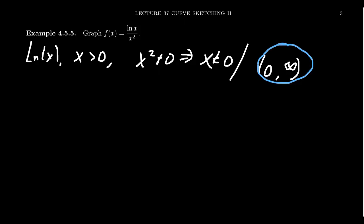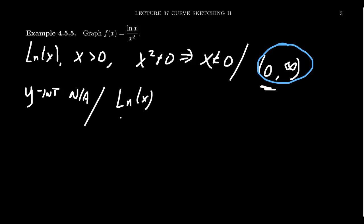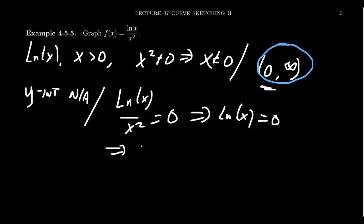Switching attention to intercepts: the y-intercept doesn't exist because x = 0 is not in the domain. For the x-intercept, when does ln(x) / x² = 0? Multiplying both sides by x², when does ln(x) = 0? Using the inverse function relationship, ln(x) = 0 implies x = e⁰ = 1. So we have a single x-intercept at x = 1.